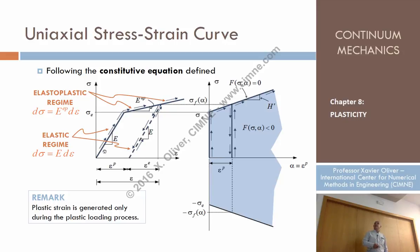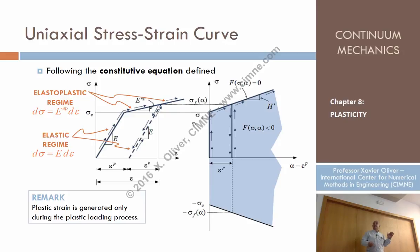So alpha is zero, that means we are increasing the stress with no evolution of alpha. As we just arrive to the yield surface — the boundary of the elastic domain — the initial elastic domain is from minus sigma_E to sigma_E. While the point is inside the elastic domain, there is no plastic strain generation, so no alpha generation. When we arrive at the yield surface, the incremental constitutive equation is elastic, whether in loading or unloading, both increasing or decreasing strain, the behavior is elastic.